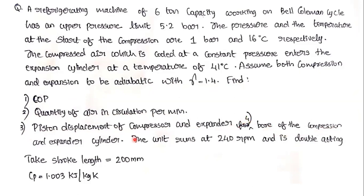We also need to find (4) the bore of the compressor and expansion cylinder. The unit runs at 240 RPM and is double acting. The stroke length is 200 mm, and the Cp value of air is given as 1.003 kJ/kg·K.